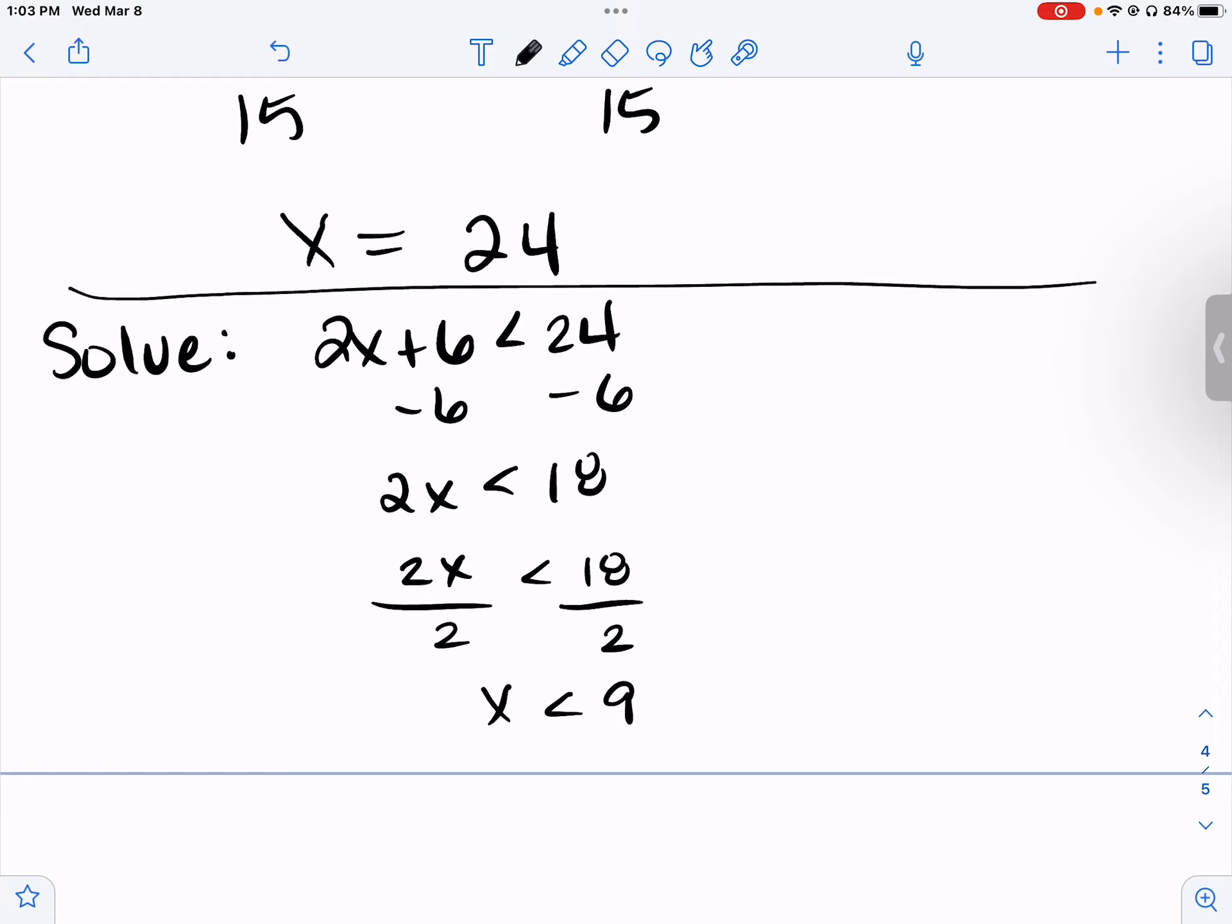Number 10: Solve 2x plus 6 is less than 24. Okay, we get rid of the add by subtraction. When you subtract, that less than symbol stays the same. We undo 2 times x by dividing by 2. 18 divided by 2 is 9. When you divide by a positive, the symbol stays the same.